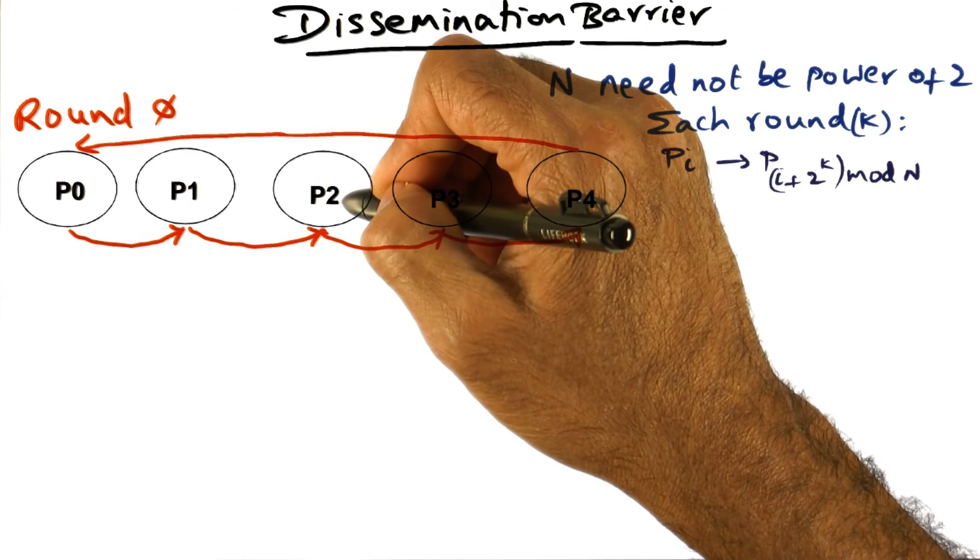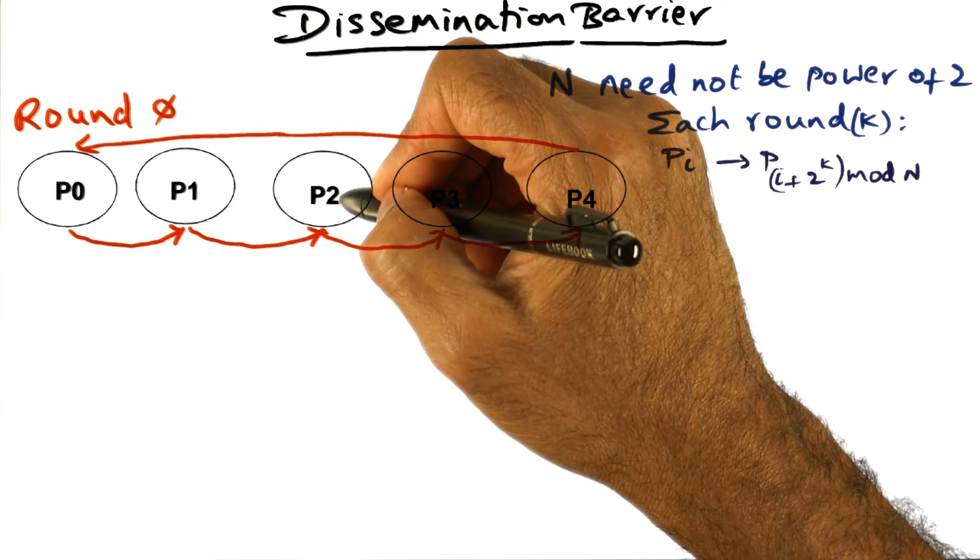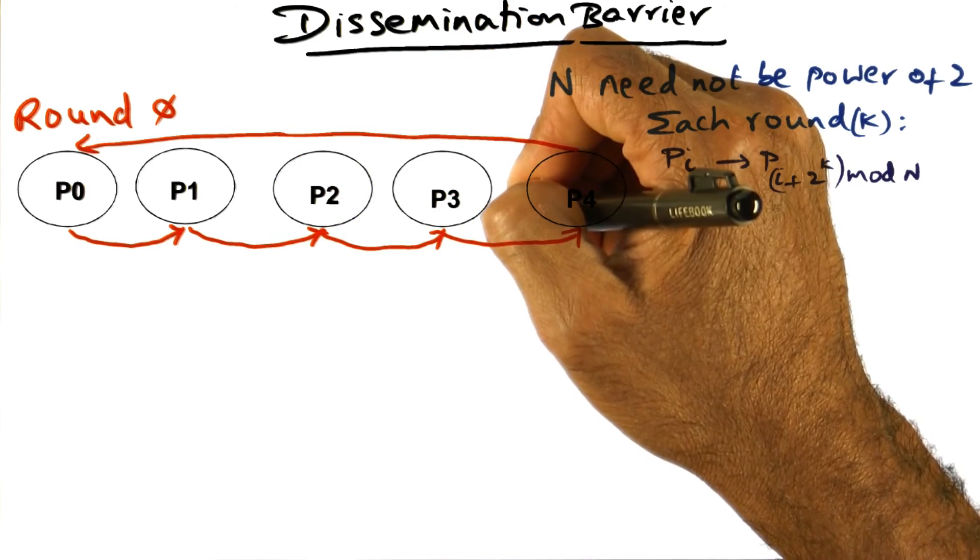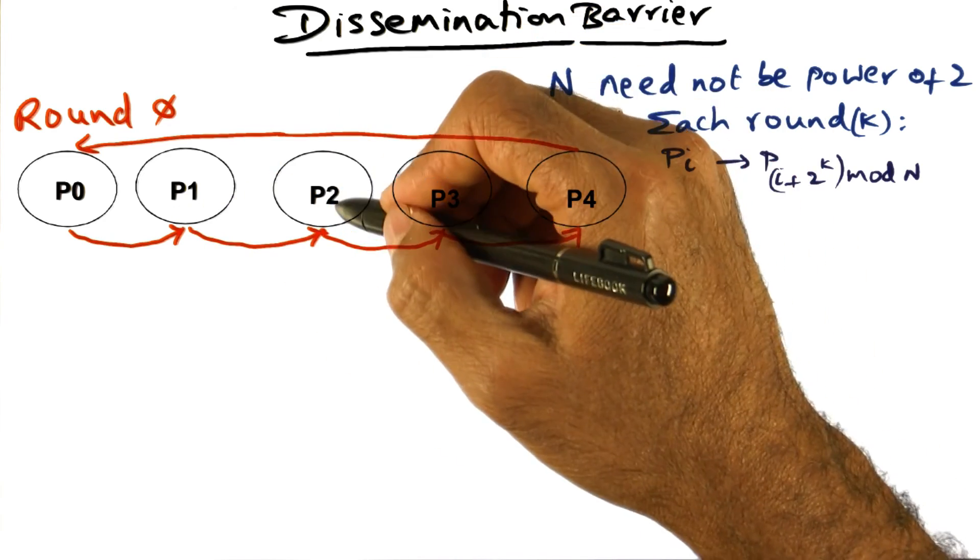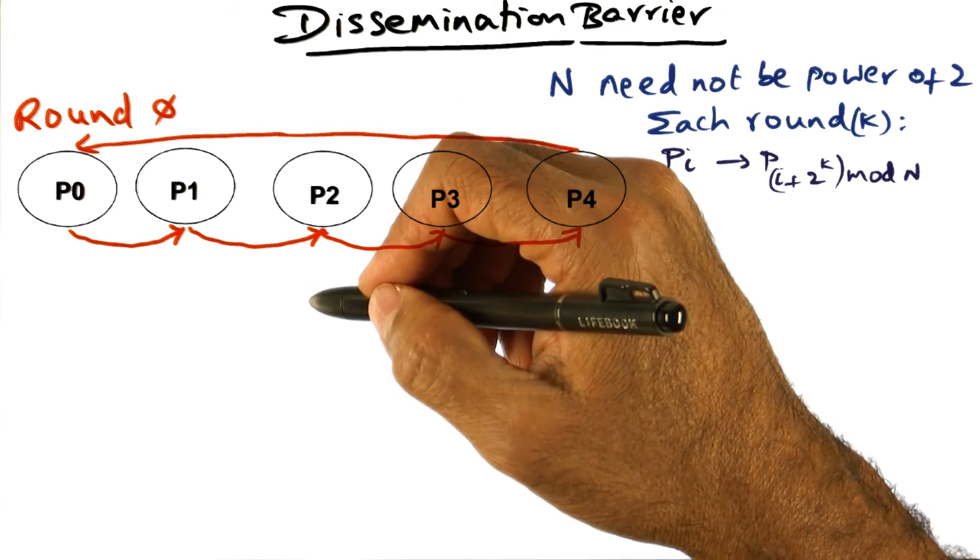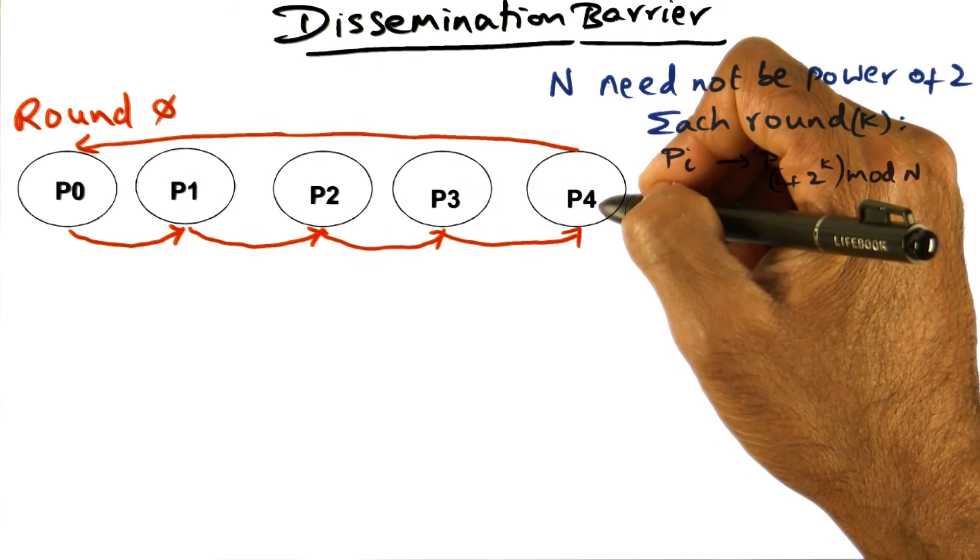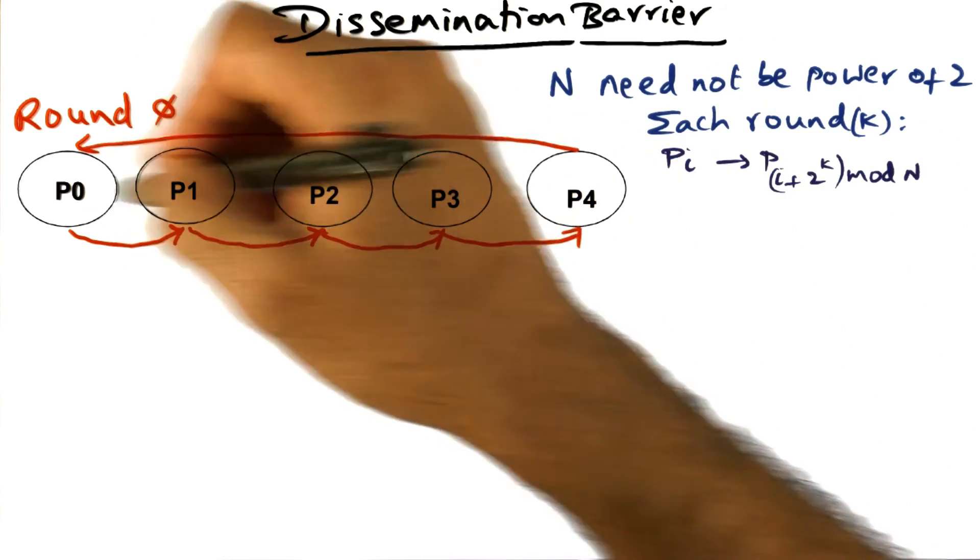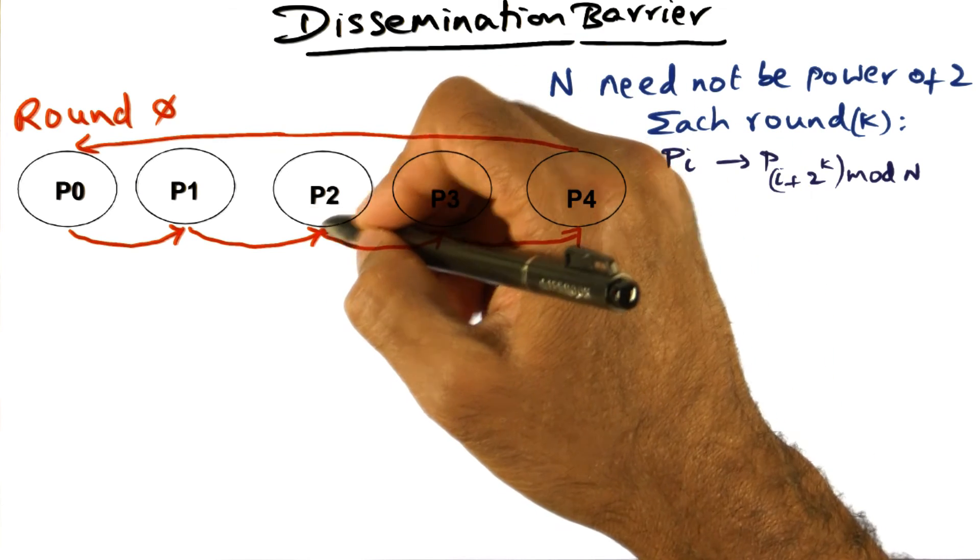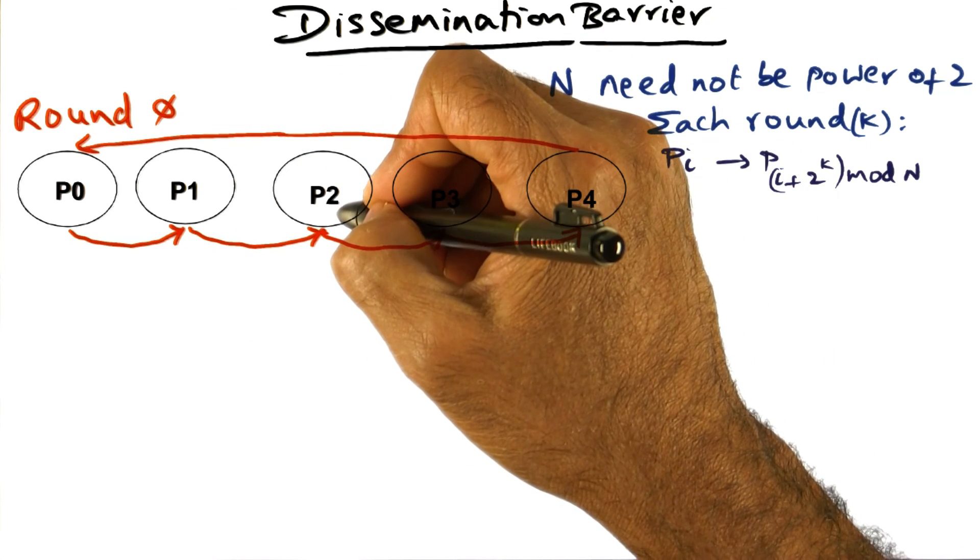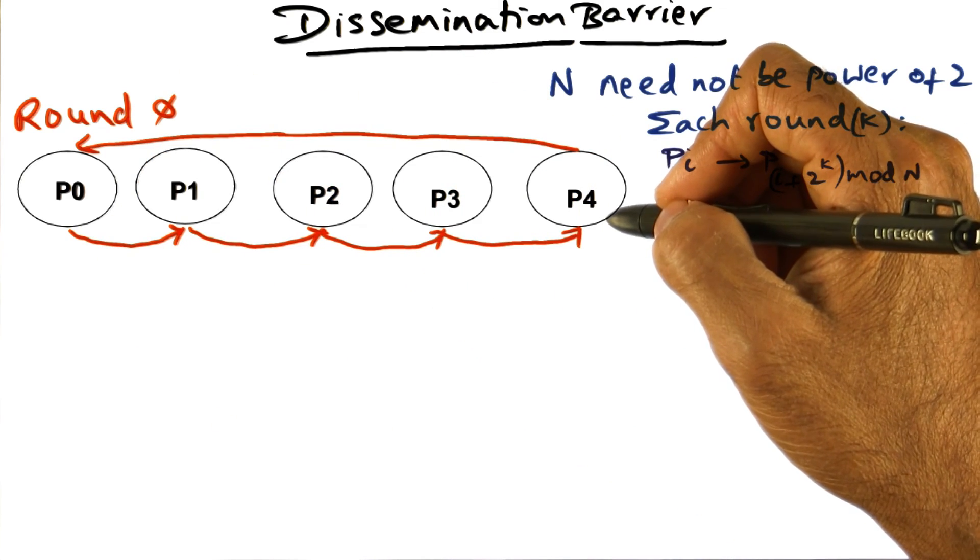Now how will these guys know that round zero is done? If you take any particular processor, let's say p2, as soon as it gets a message from p1 and it has sent a message to p3, it knows that round zero is done so far as p2 is concerned. Each of these processes are independently making a decision that the round is over based on two things: they've sent a message to the peer and they've also received a message from the ordained neighbor that they're supposed to get it from. At the end of that, they can move on to the next round.